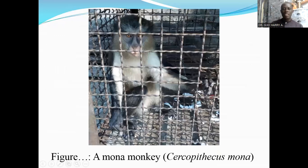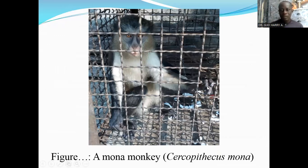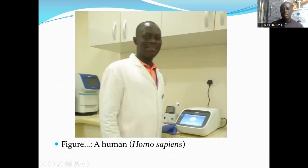This mona monkey is a typical example of a primate, having both eyes in front, giving binocular vision. We have flat fingernails on our digits instead of claws — that's one thing that distinguishes primates from other mammals. These humans, like us, are also primates. We belong to the species Homo sapiens.